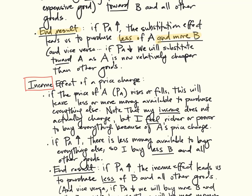And this works in the opposite direction, as well. If the price of good A were to drop, we would substitute toward A and away from other goods.